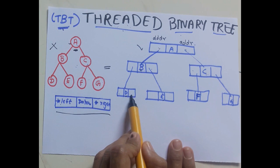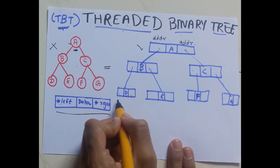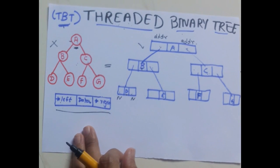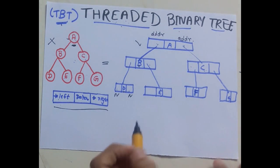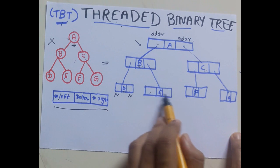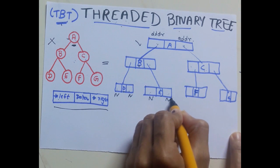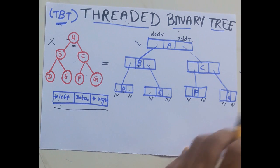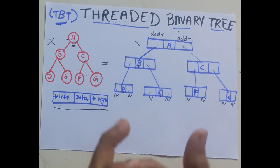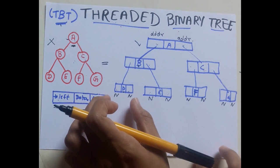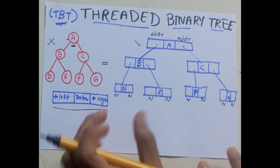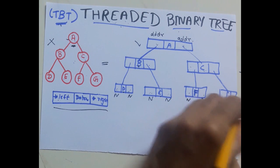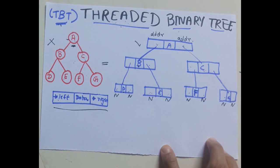The left and right pointers of node D are null. Similarly, left and right pointers of nodes E, F, and G are null. Now, when memory is allocated, it is allocated for a complete node. Though these fields are null, memory is still allocated to them. So this is nothing but wastage of memory.